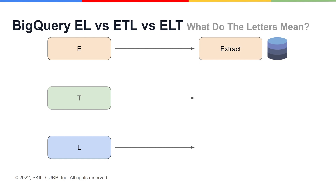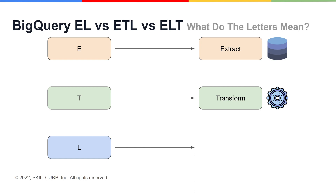Let's talk about the T now. T stands for transform. Here the data is being transformed by deduplicating it, combining it, and ensuring the quality and accessibility of that data. Transformation involves multiple processes such as cleansing, standardization, deduplication, verification, sorting, and other specified tasks that will improve the quality of the data. The transformation of the data is typically the most crucial part of the process.